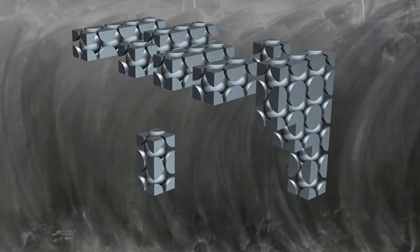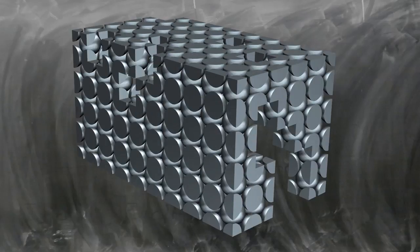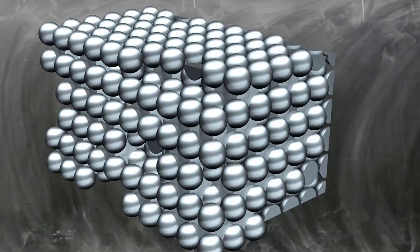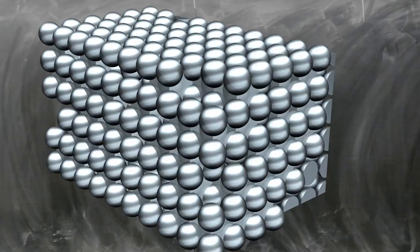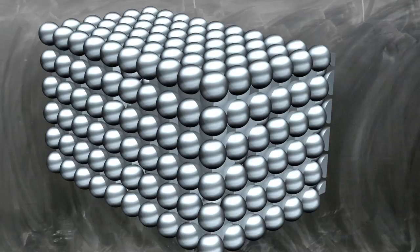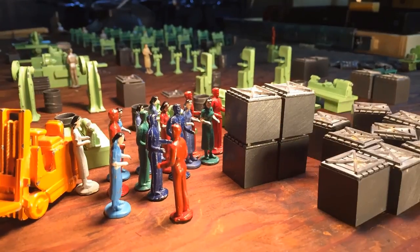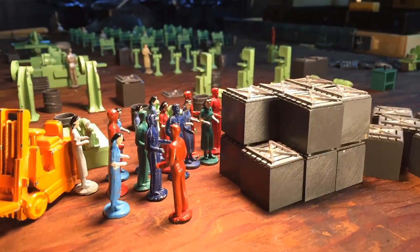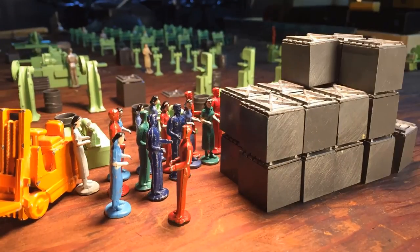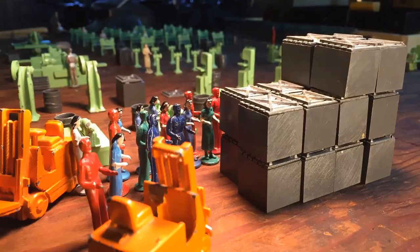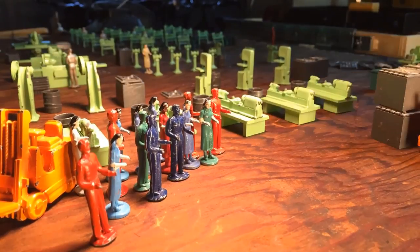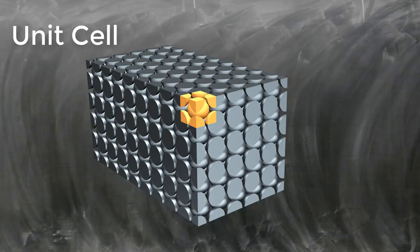Metals are crystalline in nature — that is, they're arranged in an organized, structured way. The structure of a crystal is a simple shape that's repeated over and over again in three dimensions, like these crates. The simplest repeating shape is called the unit cell.